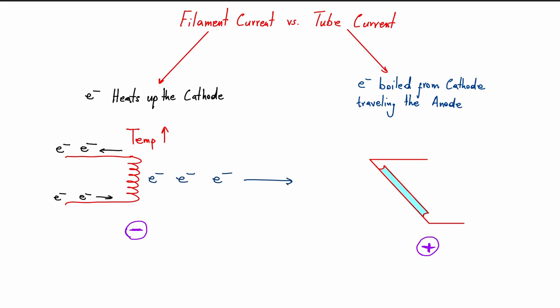Remember, filament current is the current that flows through the filament in order to heat the filament up. Over here I have a picture. The black electrons come from our mains, wherever we have our machine plugged in, and they flow through this filament. As a result, the filament has a resistance, and as a result, this filament will have a rise in temperature.